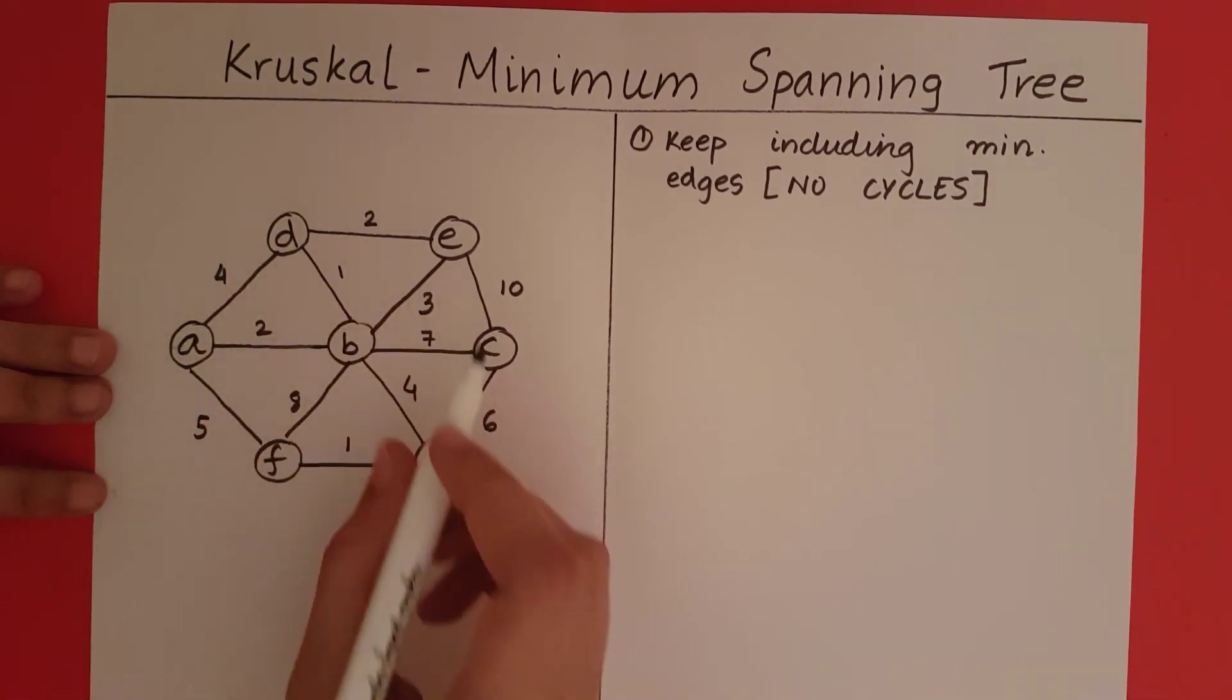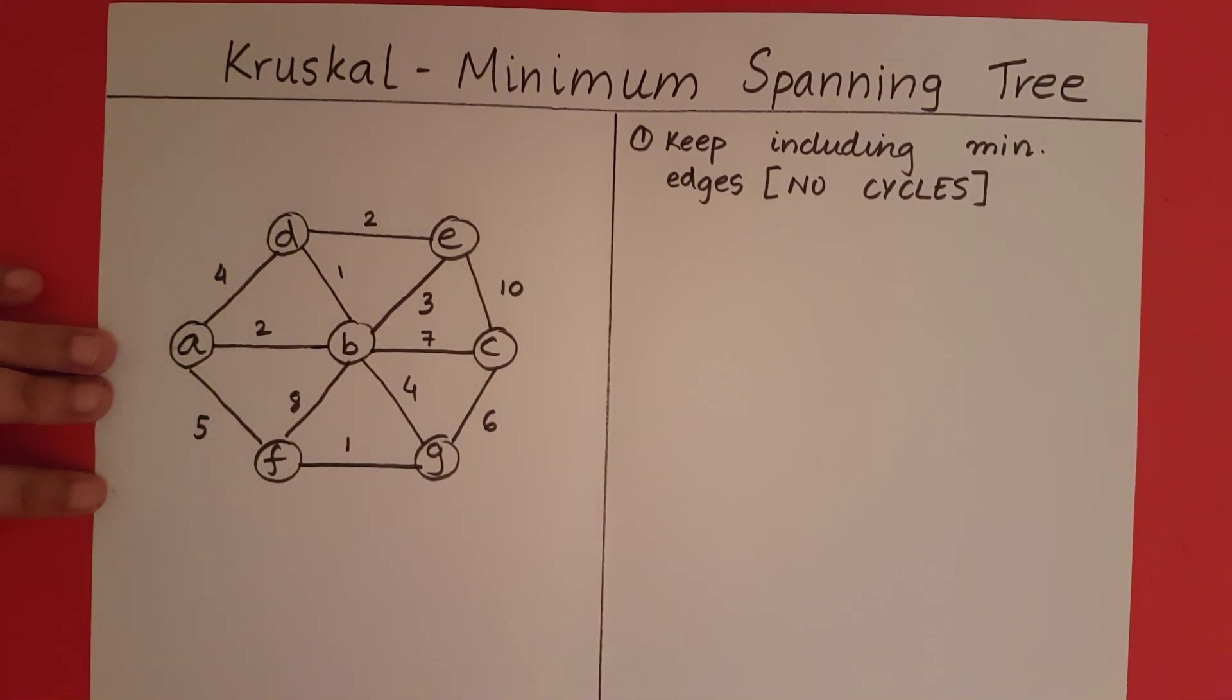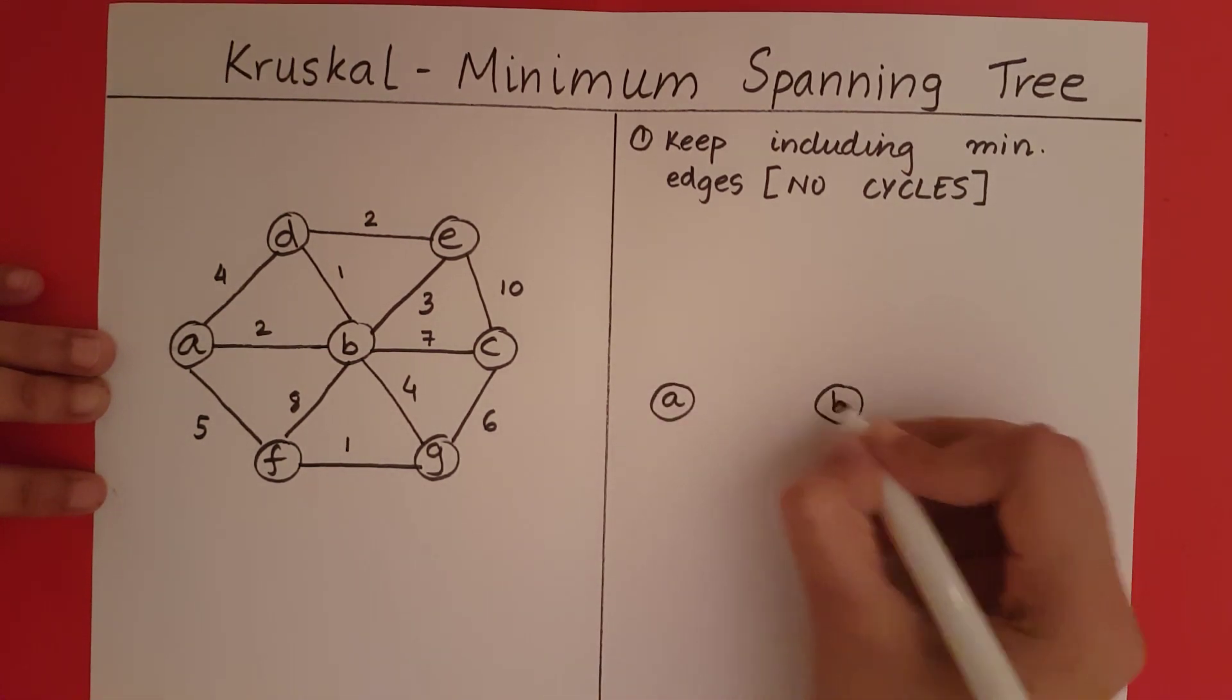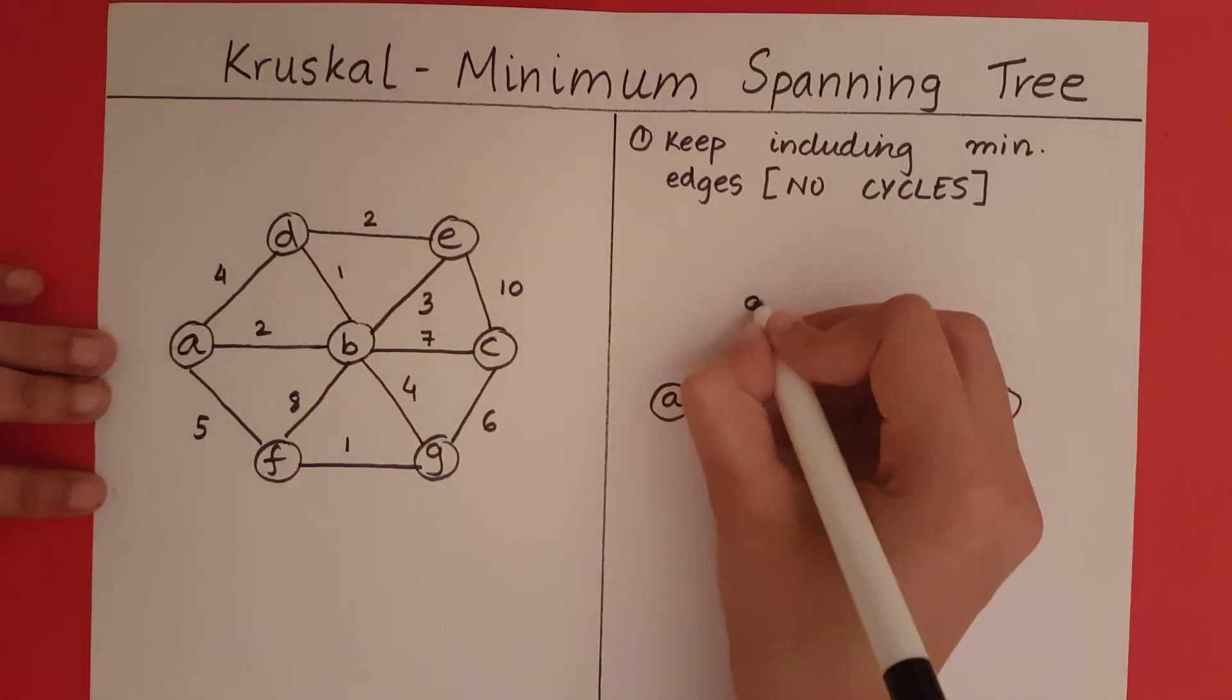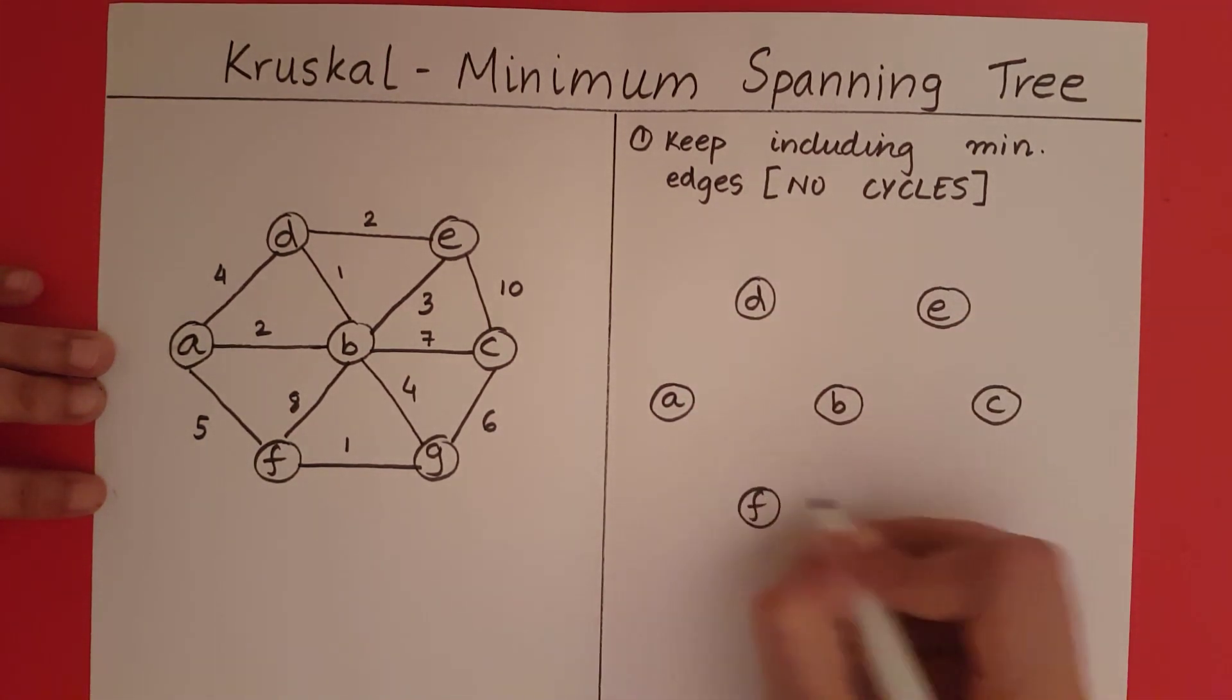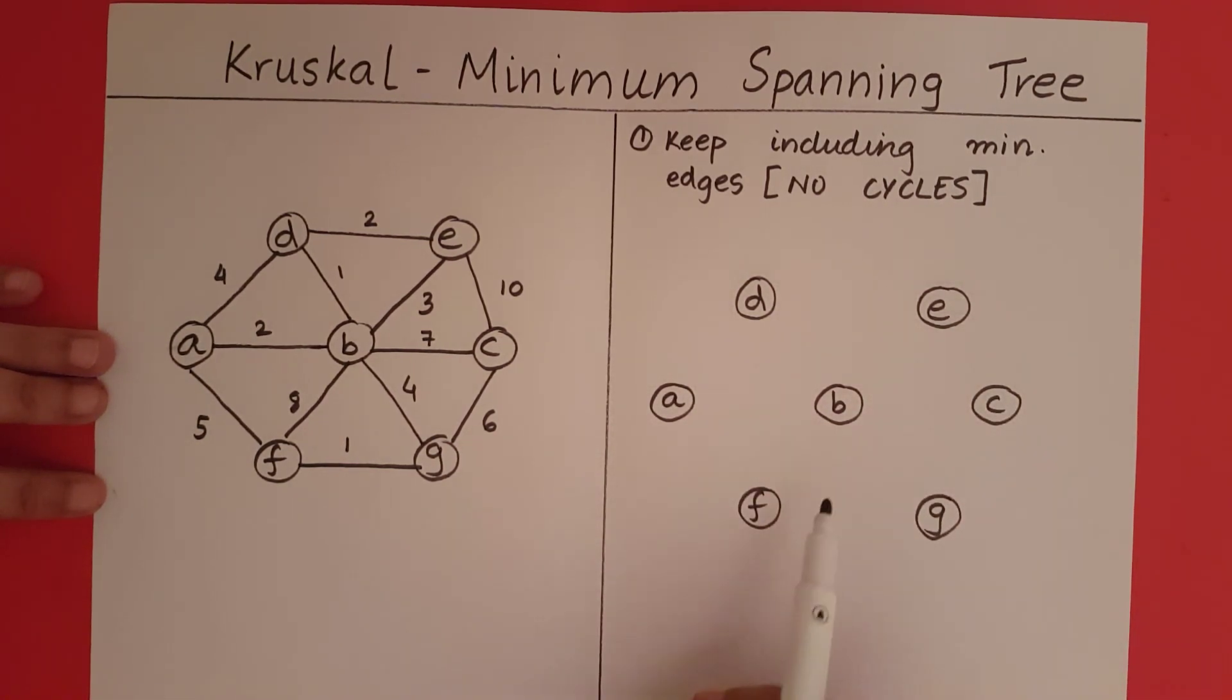Since we are going to keep including edges and we know that the subgraph is going to finally contain all the vertices, let's first draw all the vertices. Our minimum spanning tree is finally going to include all the vertices. Now let's start including the edges.